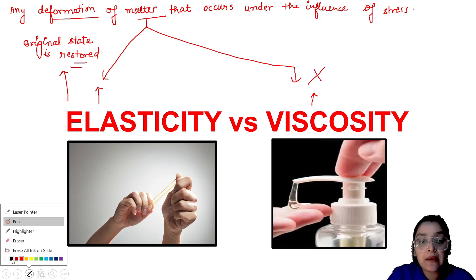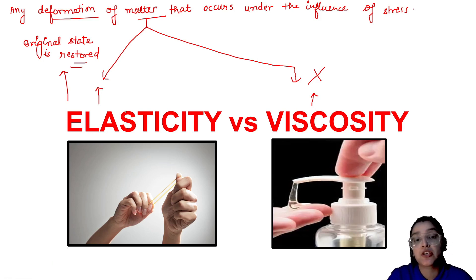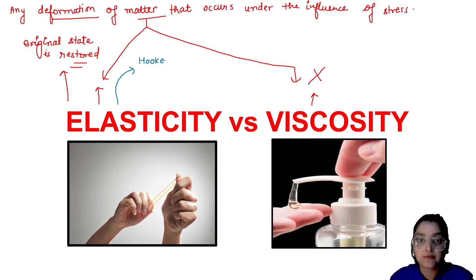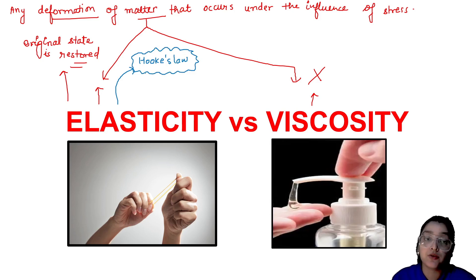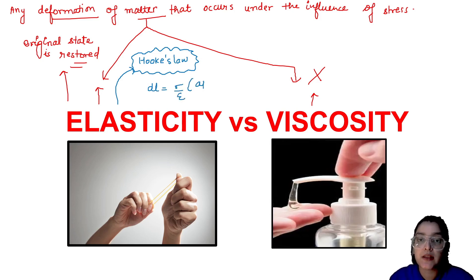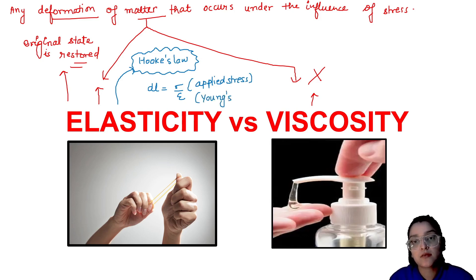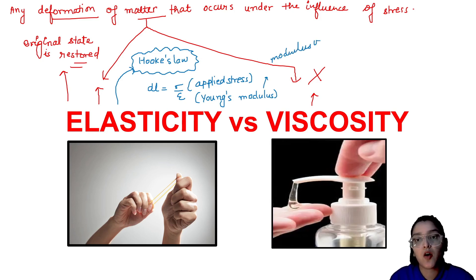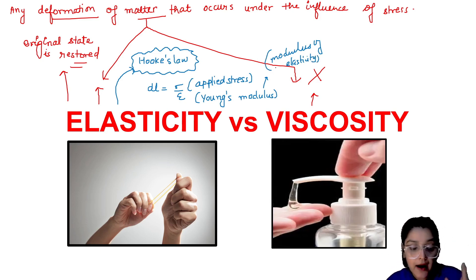The property by which matter returns to its original position is called elasticity, and it can be explained by Hooke's law. The equation is DL = sigma / E, where sigma is the applied stress and E is Young's modulus, also known as the modulus of elasticity. Hooke's law is based on the elastic behavior of any material under applied deformation or stress.